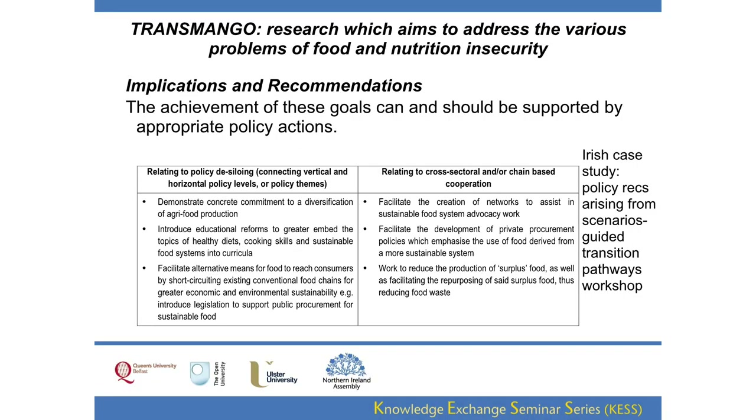The achievement of these goals can and should be supported by appropriate policy actions. Synthesis of policy recommendations from all case studies is currently underway, but those derived from the Irish case study are available. Working on a framework of policy de-siloing — horizontal and vertical integration, and cross-sectoral operations — the recommendations in Ireland are: that policymakers demonstrate concrete commitment to diversification of agri-food production; introduce educational reforms to better embed topics of healthy diets, cooking skills, and sustainable food systems into curricula; and facilitate alternative means for food to reach consumers by short-circuiting conventional food chains for greater economic and environmental sustainability — for example, by supporting public procurement.